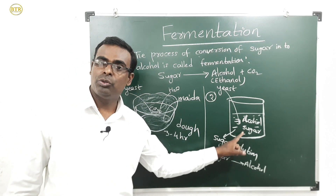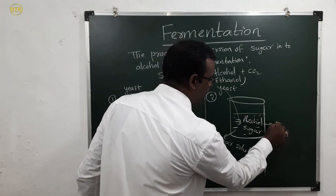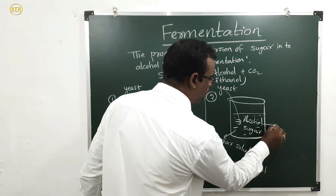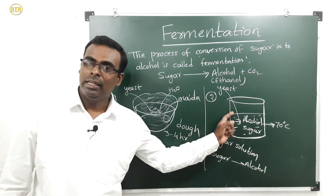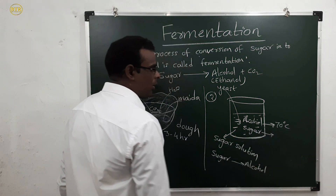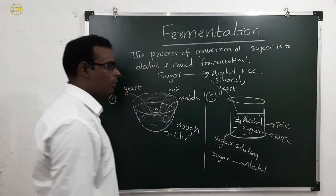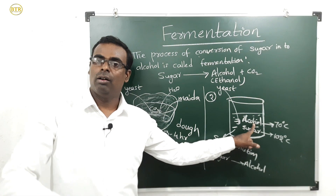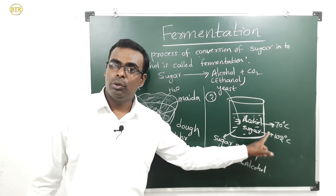Alcohol, also called ethanol, boils at 70 degrees Celsius. Sugar boils at 102 degrees Celsius. So the boiling point of ethanol is 70°C and the boiling point of sugar is 102°C.